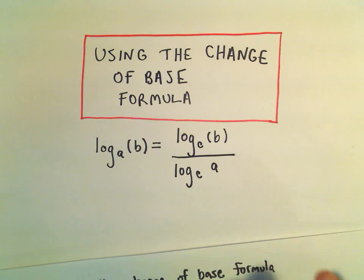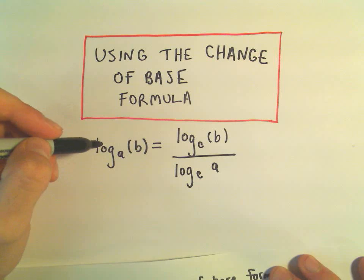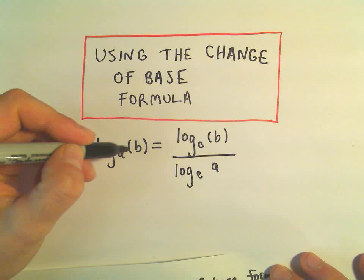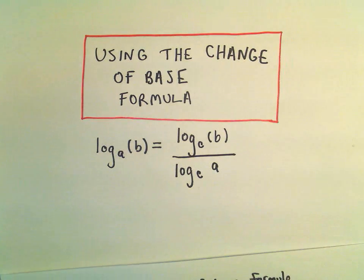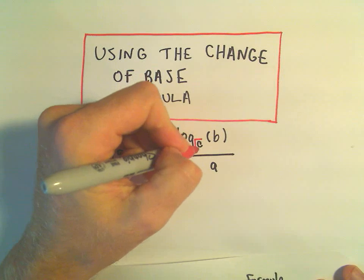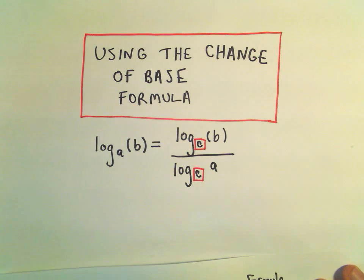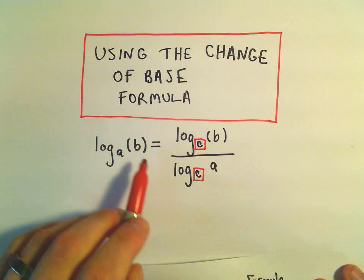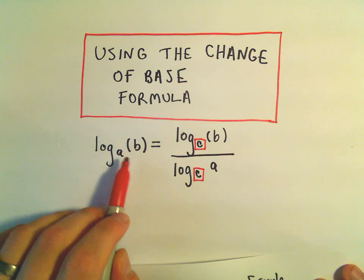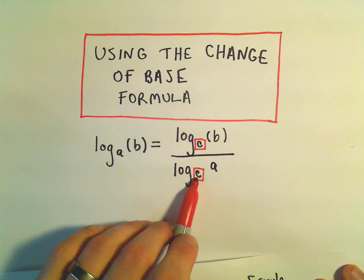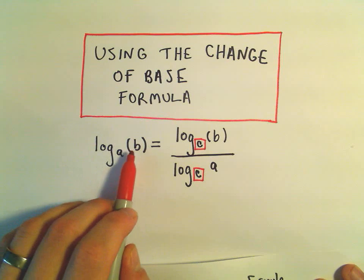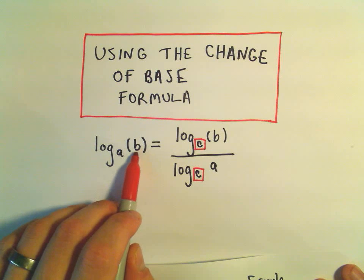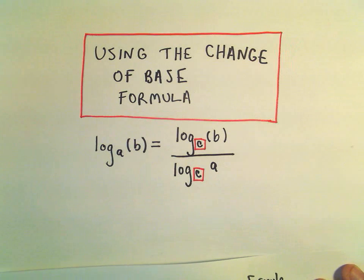The idea is we can use this change of base formula. If we have some logarithm with some base a of b, we can turn this into a new equivalent ratio of logarithms, and we can pick any new base that we want. I've got it labeled as c. If your calculator can do base 10 or base e, you would use base 10 or base e. Whatever the original base was, we take log base c of that in the denominator, and whatever the original value was, that's what we throw in the numerator.